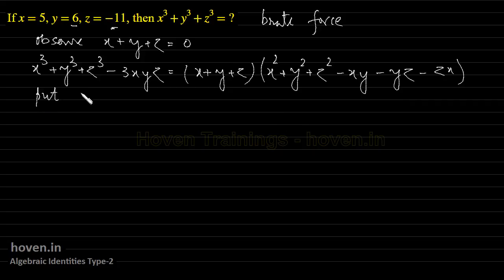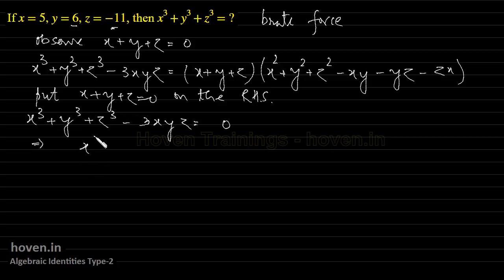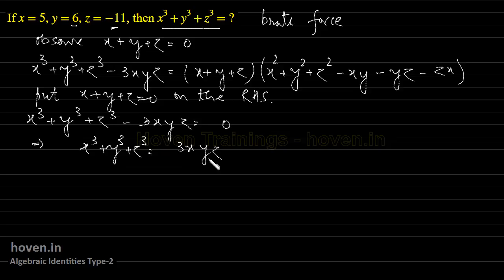So we can put x plus y plus z equal to 0 on the right hand side. What we get is x cube plus y cube plus z cube minus 3xyz is equal to 0, so the right hand side becomes 0. Which implies x cube plus y cube plus z cube is equal to 3xyz.